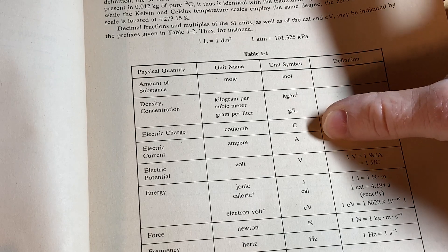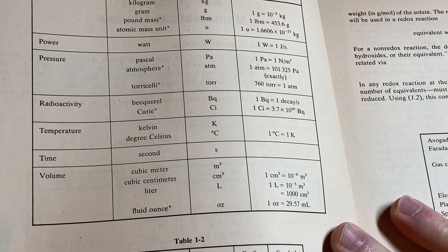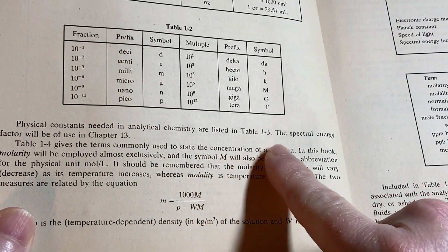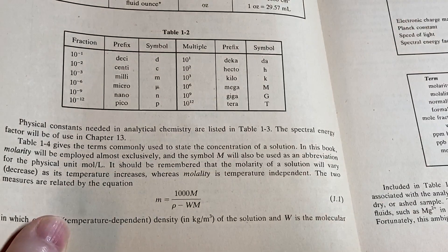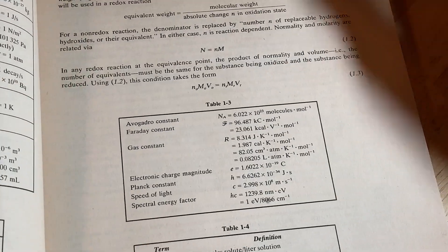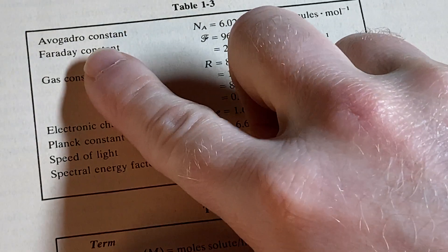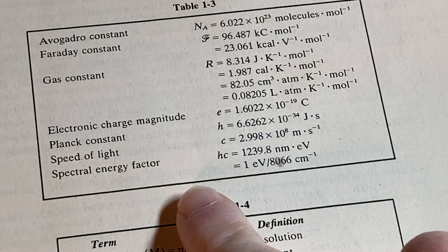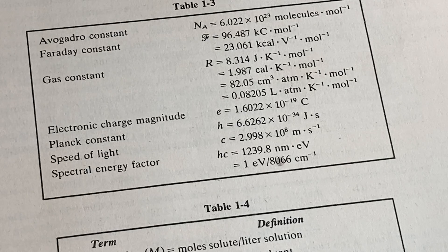Then there are the symbols they often use — kind of a refresher of things you may have seen. Physical constants needed in analytical chemistry are listed in Table 1-3. The spectral energy factor will be used in Chapter 13. Some physical constants you might be familiar with: the Avogadro constant, Faraday constant, gas constant, electric charge magnitude, Planck constant, speed of light, and the spectral energy factor.